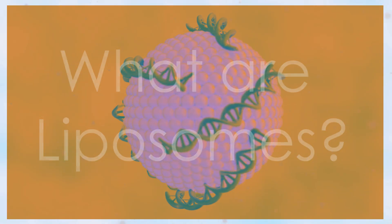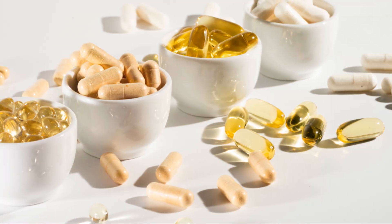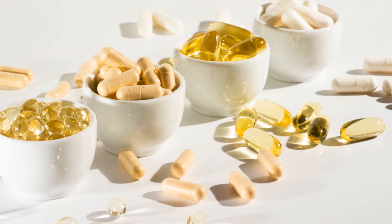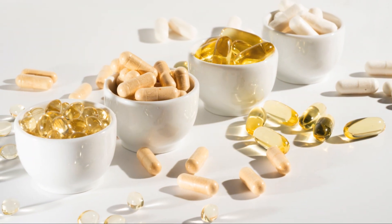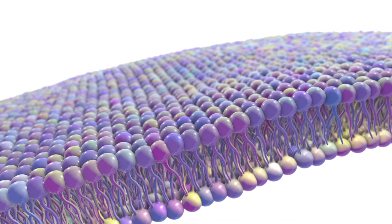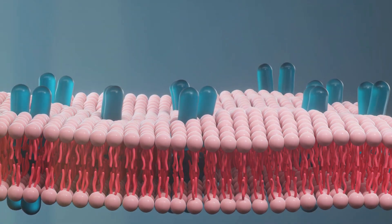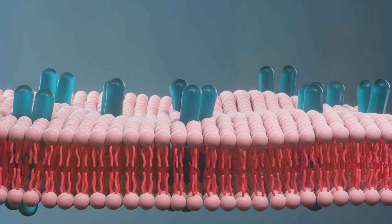Liposomes are tiny spherical vesicles with a phospholipid bilayer similar to cell membranes. This unique structure allows them to encapsulate both hydrophilic and hydrophobic substances. The bilayer is composed of phospholipids which have hydrophilic heads and hydrophobic tails. When in an aqueous environment, these phospholipids arrange themselves into a bilayer, creating a stable vesicle.